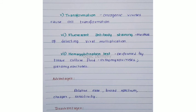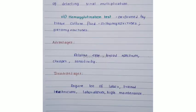Fluorescent antibody staining method is also used for detecting viral multiplication. The hemagglutination test is performed using tissue culture fluid for viruses like orthomyxoviruses and paramyxoviruses. The advantages of cell culture technique are that it is relatively easy, has broad spectrum applicability, is cheaper, and shows high sensitivity. The disadvantages are that it requires a lot of labor, trained technicians, many laboratory facilities, high maintenance, and takes a lot of time.